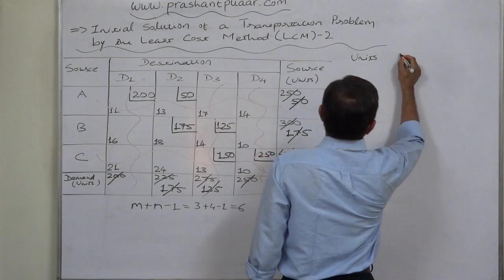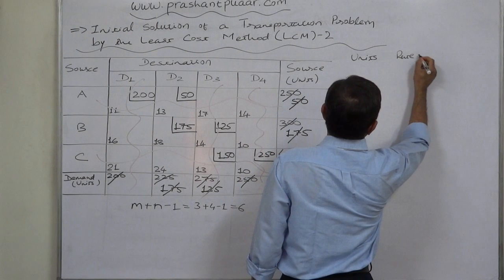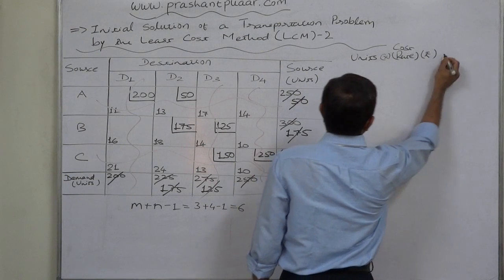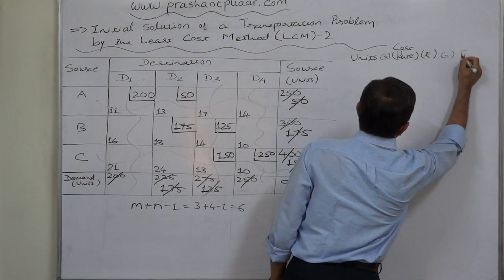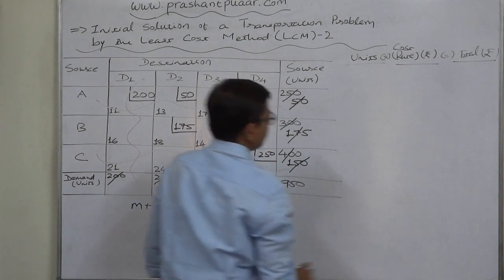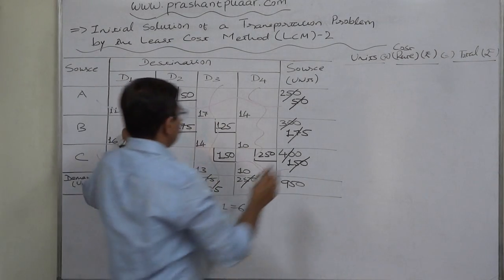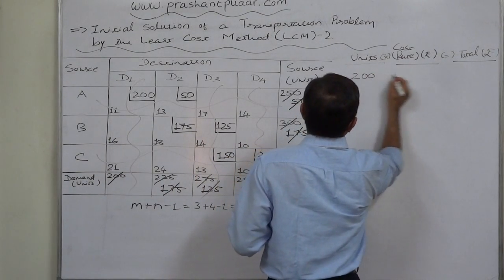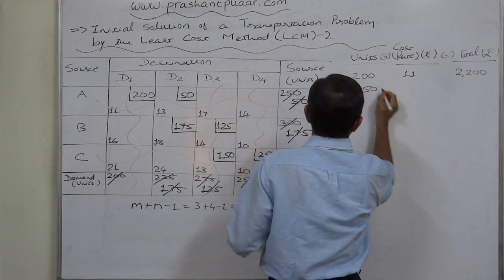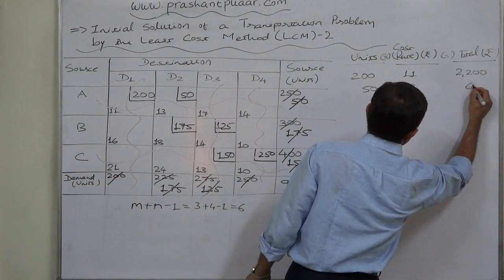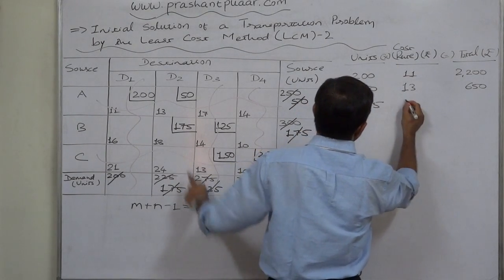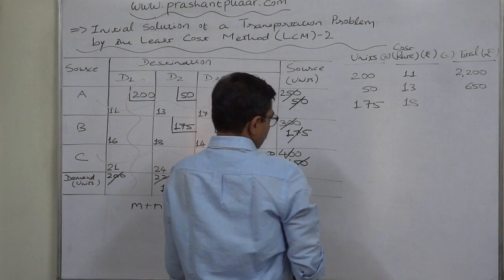Now let us calculate the total cost. We have units, rate (cost per unit in rupees), and the multiplication gives total cost. First: 200 units at 11 rupees = 2,200 rupees. Next: 50 units at 13 rupees = 650 rupees.